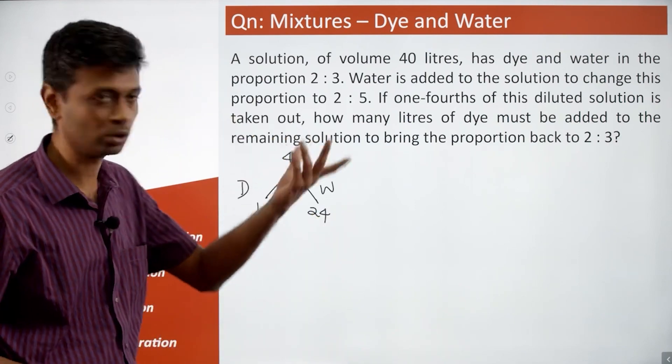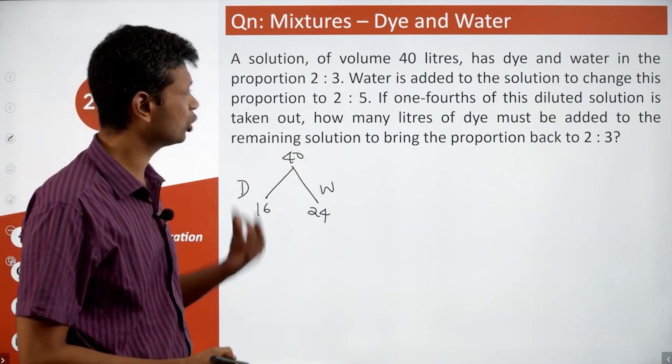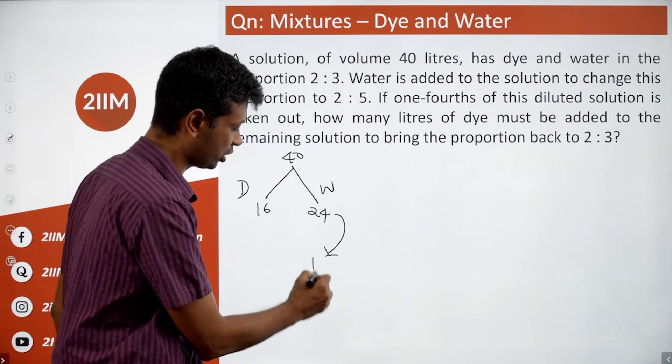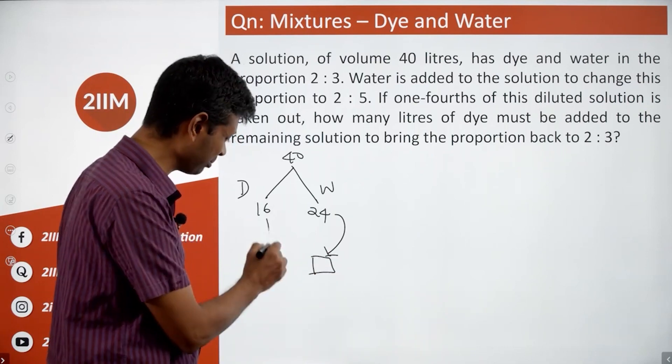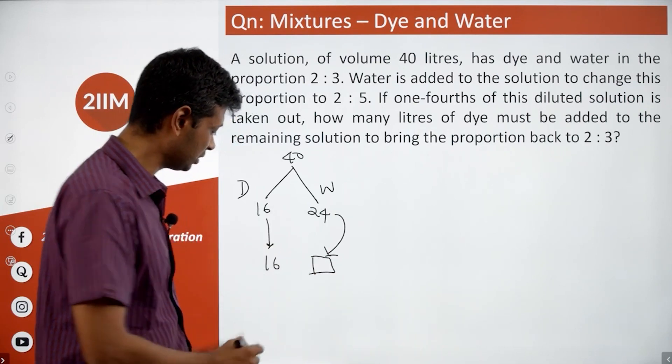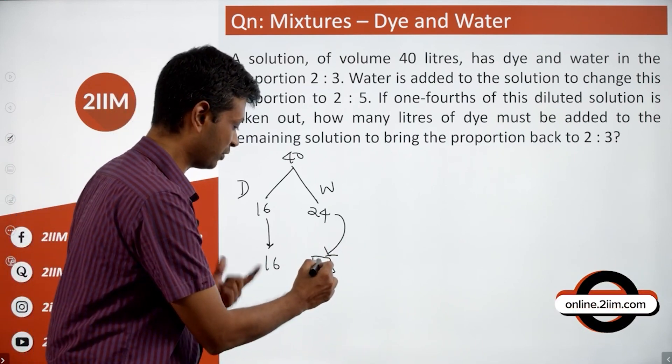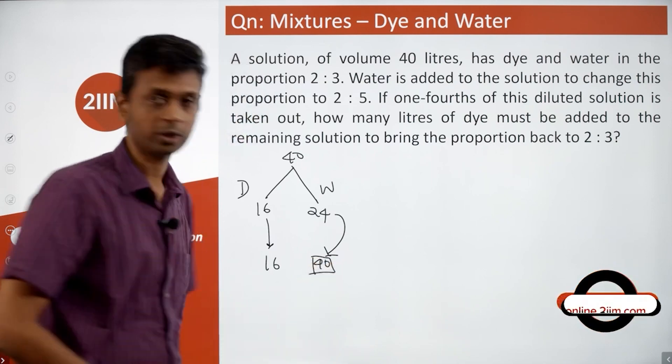Water is added to the solution to change this proportion to 2 is to 5, so we're adding water, so water will change, but the dye remains as 16. This ratio is 2 is to 5: 2 into 8 is 16, 5 into 8 is 40, so this should be 40.